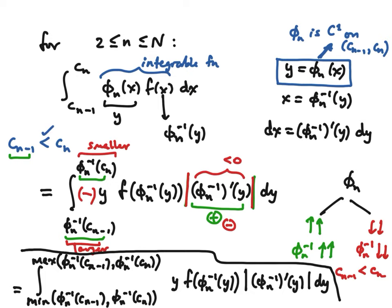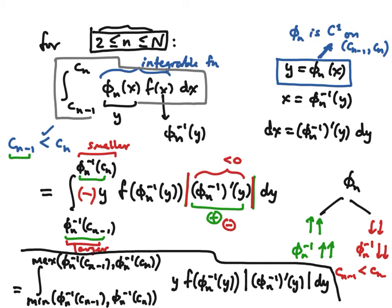For a fixed value of little n in this range, we've now proven that the integral we started with can be expressed in this form. Because the original integral is finite, that implies this expression is also finite. So for such values of n, there's no problem — it's just a straightforward change of variables.